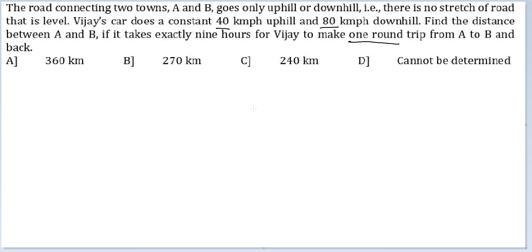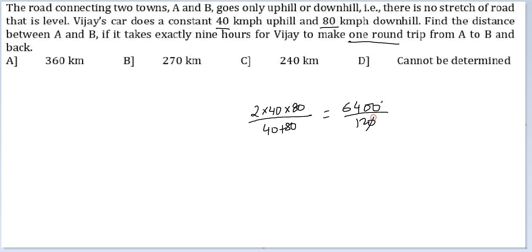Average speed equals 2 × 48 × 80 divided by 48 + 80, giving us 6400 divided by 120. Cancelling down, this gives 160 by 3, which is approximately 53.33 kmph.